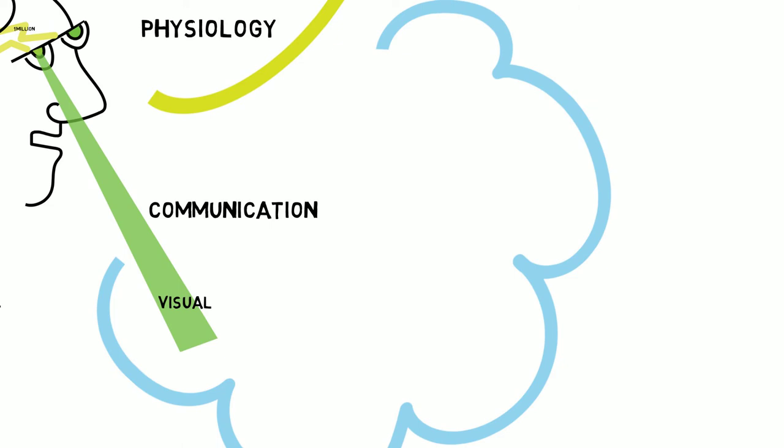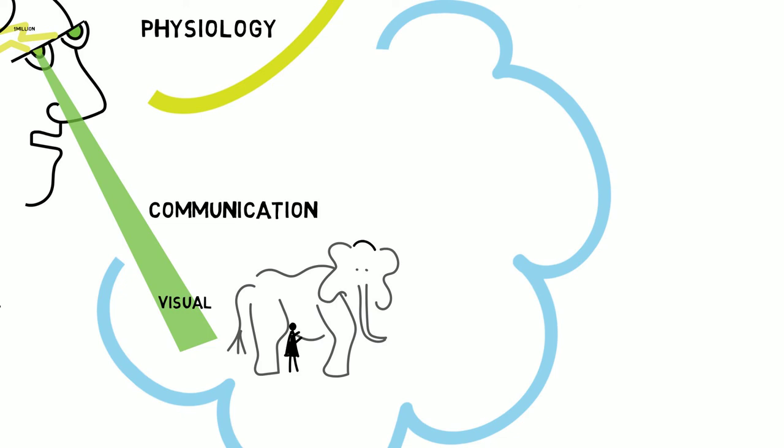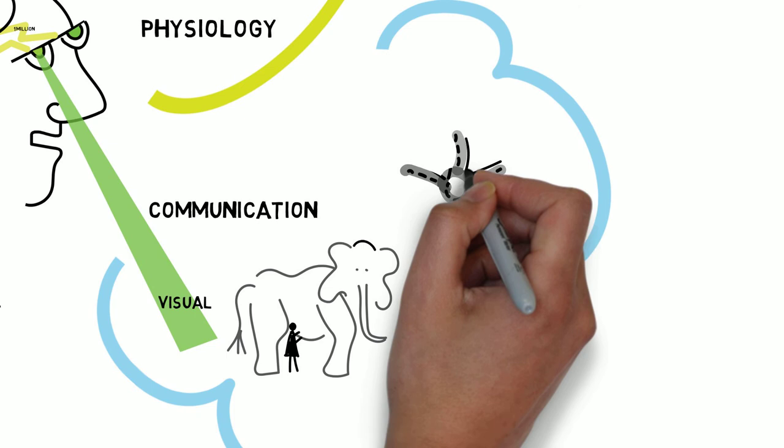So what does that all mean? Well, for communication images are key. Imagine trying to describe a giant wrinkly gray animal with a long nose that was much bigger than a person versus drawing a picture of it.